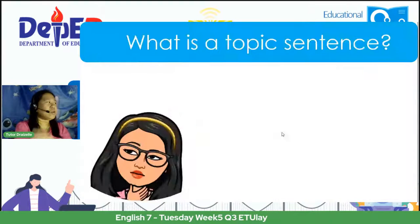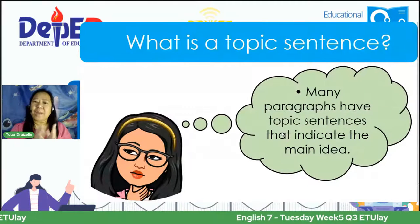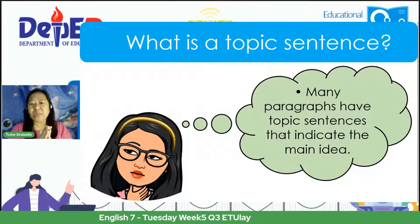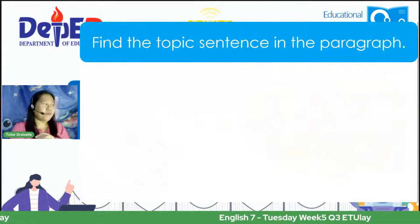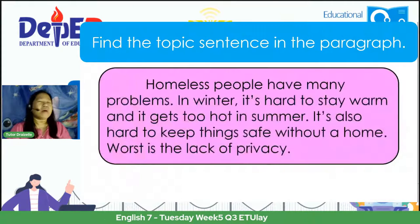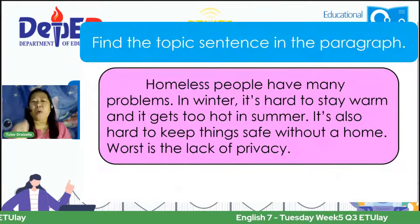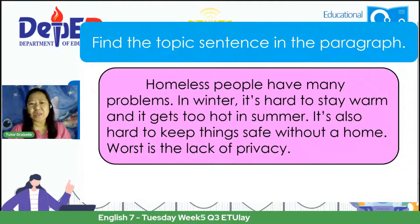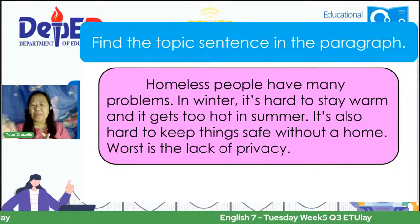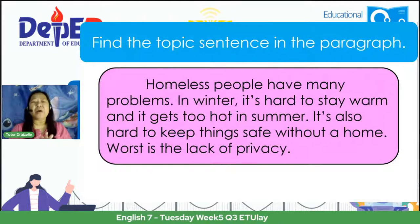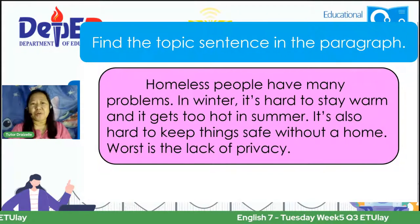Let us proceed to the next topic: the topic sentence. Many paragraphs have topic sentences, and the topic sentence always indicates the main idea. Now, let us find the topic sentence in this paragraph. Tell me which sentence — one, two, three, or four — is the topic sentence: 'Homeless people have many problems. In winter, it's hard to stay warm, and it gets too hot in summer. It's also hard to keep things safe without a home. Worst is the lack of privacy.'